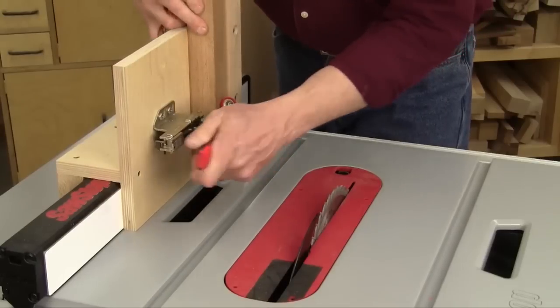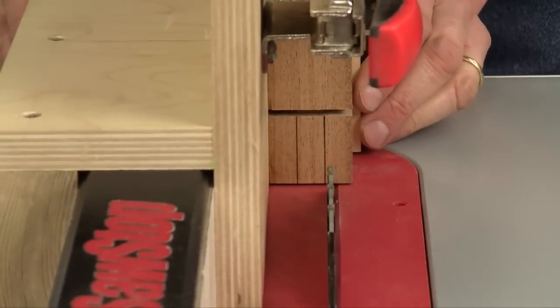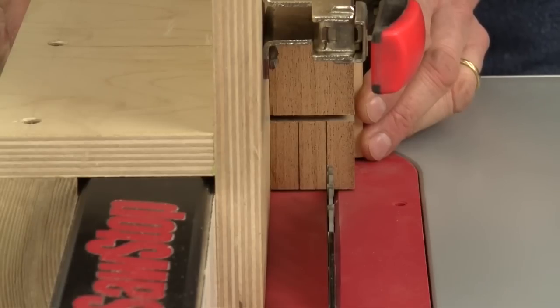Clamp the work piece vertically to the tenoning jig and pull the jig in front of the blade. Now move the rip fence over close to the blade so you can line up the first long cheek cut. Lock down the rip fence.